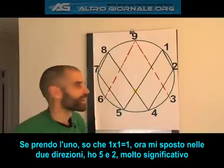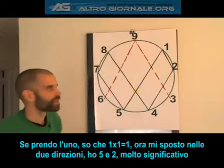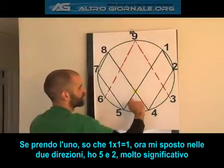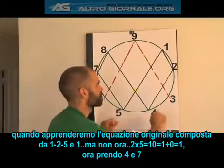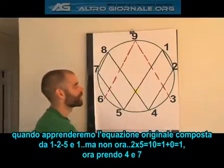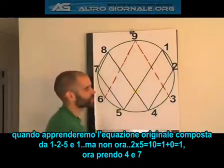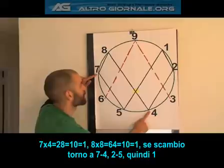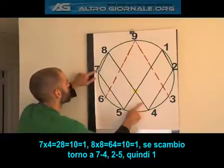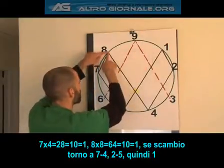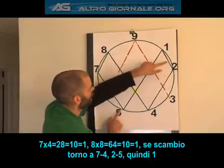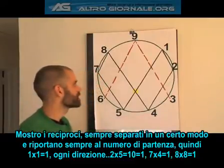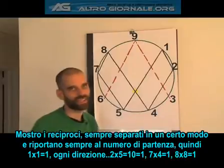If I take my 1, I go 1 times 1 is 1. Moving one step each direction, I get to 5 and 2 — very significant when we learn about the original equation composed of 1, 2, 5, and 1. 2 times 5 is 10, which reduces back to 1. Going another step: 4 and 7 — 7 times 4 is 28, which reduces to 10, which equals 1. Up again: 8 times 8 is 64, which comes back to 1. Then they return to the same numbers, 7 and 4, 2 and 5, back to 1. What I'm showing here are called reciprocals — always separated in a certain way, always coming back to the number from which they started.